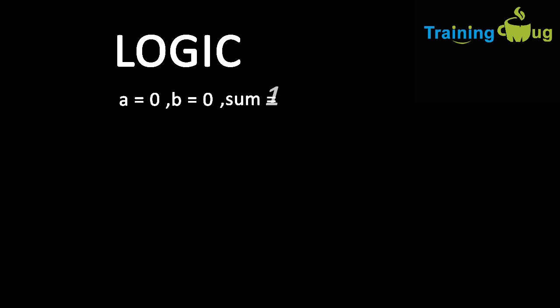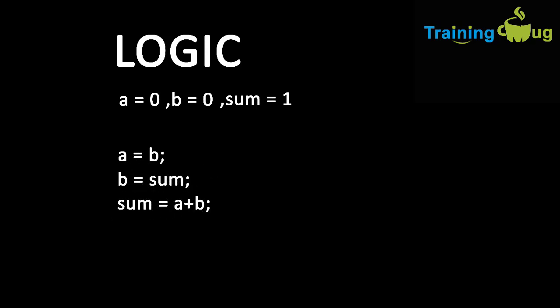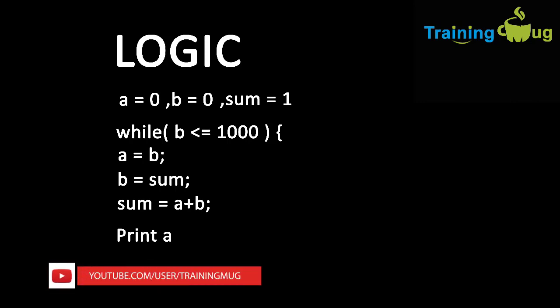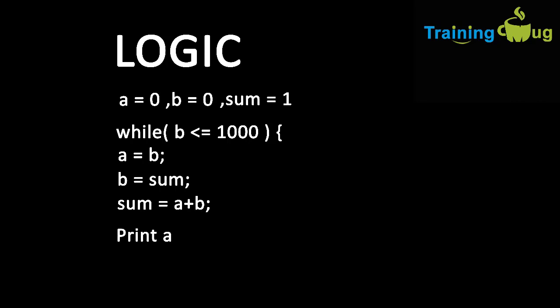Let's look at the logic. The idea is we'll take three variables: a initialized to 0, b initialized to 0, and sum initialized to 1. Then we assign b to a, sum to b, and calculate sum as a plus b. We print a, not sum, and we iterate this loop while b is less than or equal to 1000. I'll clearly explain why we print a and not sum while writing the code in Eclipse.